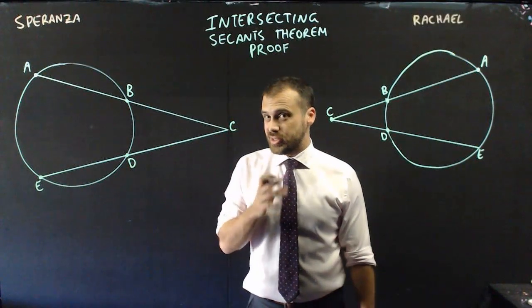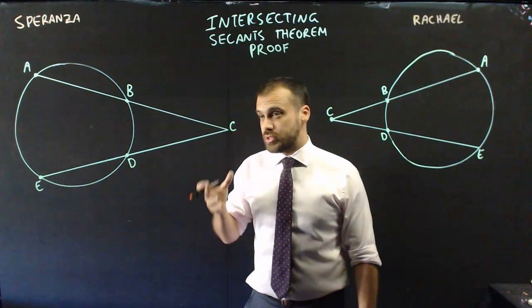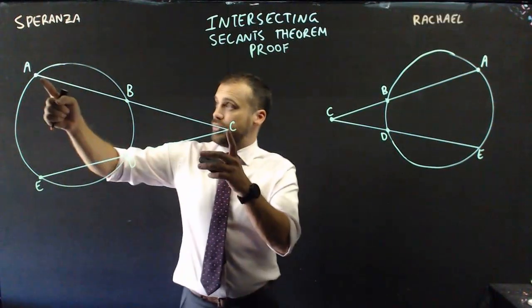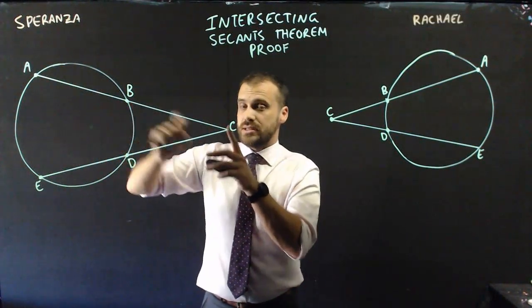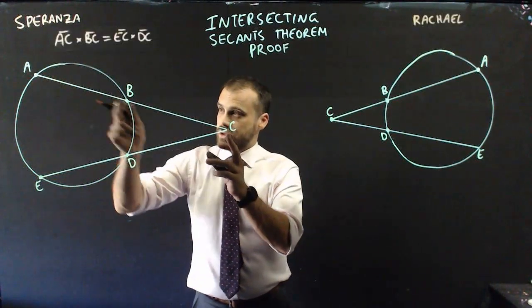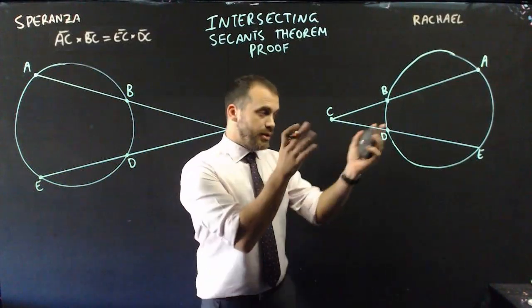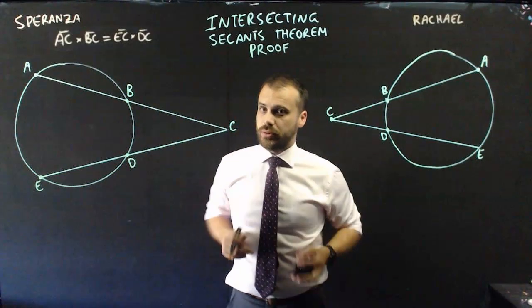What is the intersecting secant theorem? Well, it feels a lot like the intersecting chords theorem, and it says that this times this is equal to this times this. Again, this times this equals this times this, and we have it written there. These are mirror images, so we can work on both.